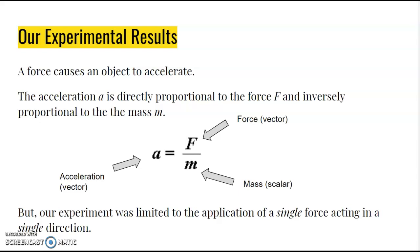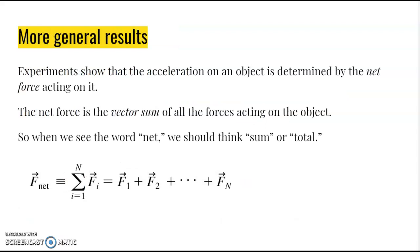We could have done more experimentation with multiple applied forces acting on the block, and what we would have found is that acceleration is determined by the net force acting on it. Net force is the vector sum of all the forces acting on the object — the total amount of force. We have to be careful with the word 'sum' because we're dealing with vector quantities, so we add them vectorially. If there are multiple forces acting on an object, all of them affect the motion.